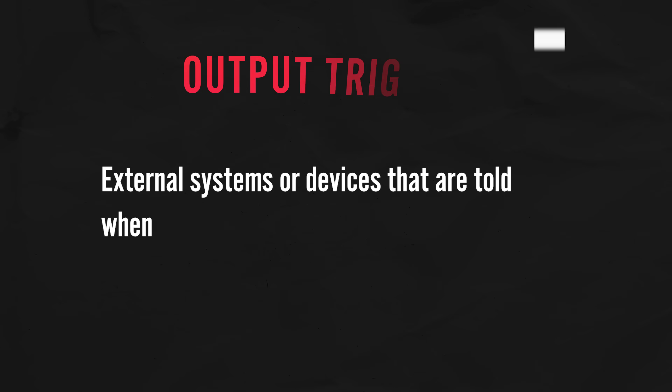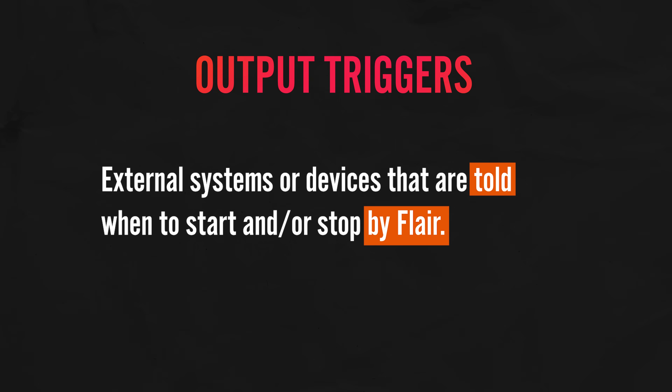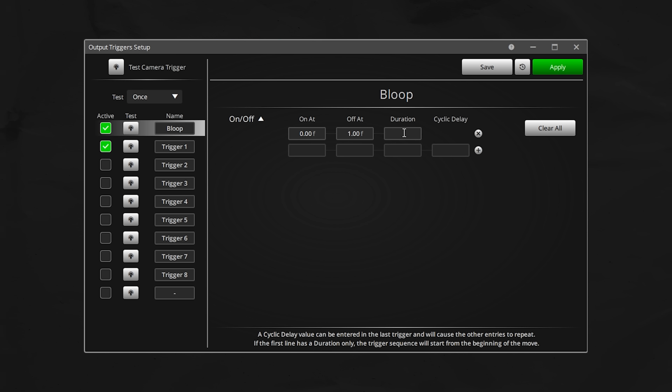Or you can synchronize the moves to timecode, which is incredibly useful, especially in situations such as music videos. Output triggers do the opposite — they allow you to start and stop external systems at the exact time and frame that you specify on your timeline in Flare.